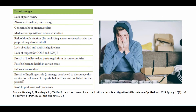However, there are many disadvantages of preprints, including: lack of peer review; absence of quality assurance (though this is itself a controversy); concerns about premature data; media coverage without robust evaluation; risk of double citation, since by publishing a peer-reviewed article the preprint may also be cited; lack of ethical and statistical guidelines in some preprints; lack of respect for COPE and ICMJE guidelines; breach of intellectual property regulations in some countries; possible harm to public health in certain cases; information overload; breach of the Ingelfinger rule, which discourages dissemination of research before journal publication; and rush to post low-quality research.